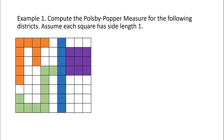Here is an example of a region where four districts have been color-coded: an orange district, a green district, a blue district, and a purple district. Our goal is going to be to compute the Polsby-Popper measure for a few of these districts. We're going to assume that each square has a side length of 1.